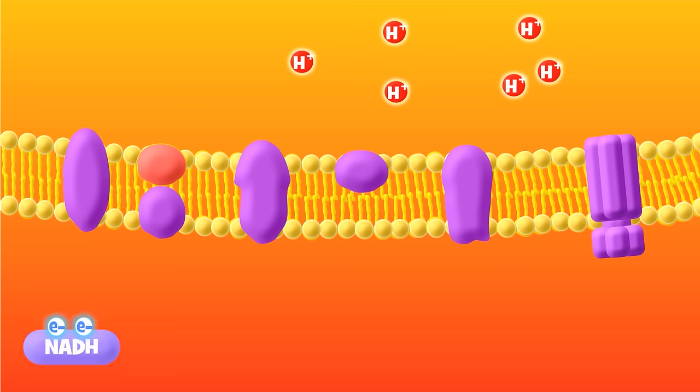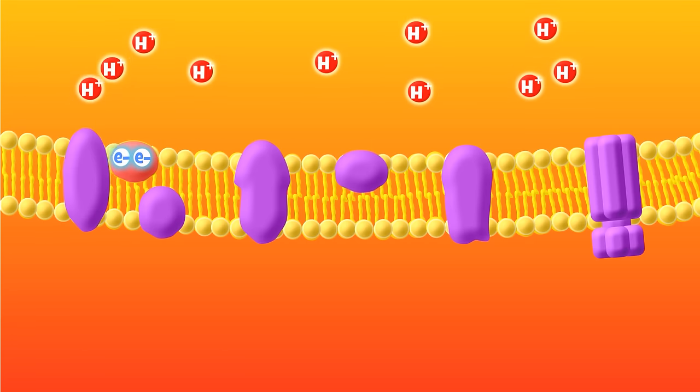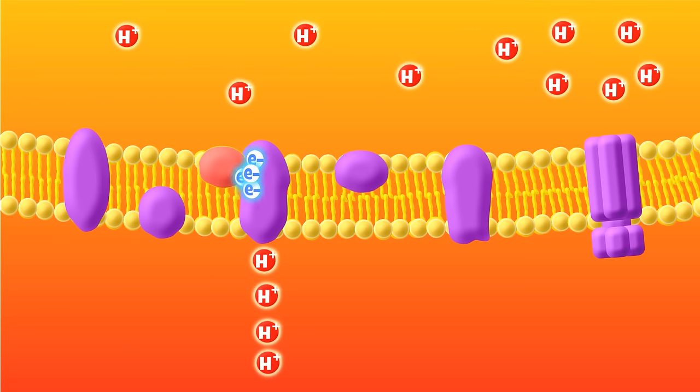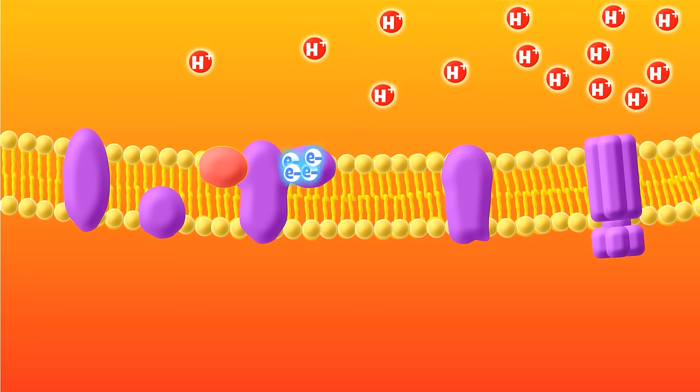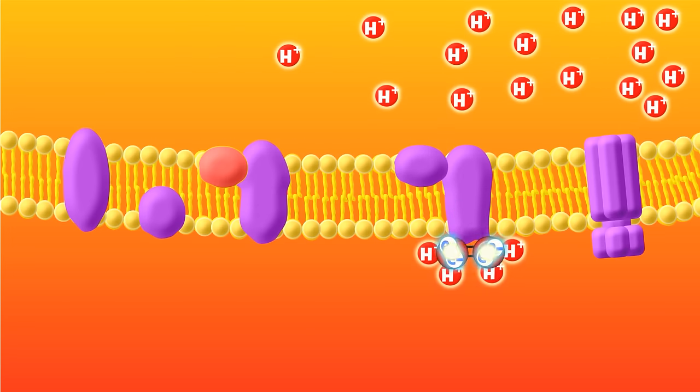Since we made many electron carriers throughout respiration, the electron transport chain happens over and over again, making between 30 to 34 ATP molecules for every glucose that entered respiration.